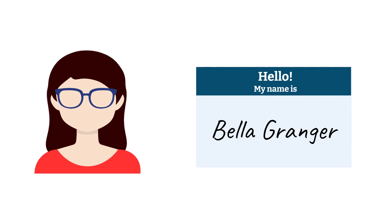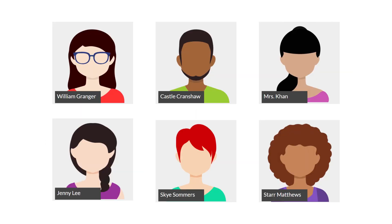Meet Bella Granger. She is a student in Mrs. Khan's World History class. But every time she joins her Zoom classes, her dad's name appears instead of hers. This happens because Bella isn't signing in to her Zoom meetings the right way. This same issue might be happening to you.